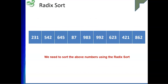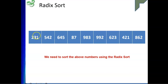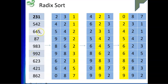Let us understand what the most significant and least significant digits are. If we take a list of 9 numbers with a maximum of 3 digits, the least significant digit is position 1 and the most significant digit is position 3. We have 10 digits from 0 to 9. Taking one digit at a time, starting from the least significant to the most significant, the sorting is performed.